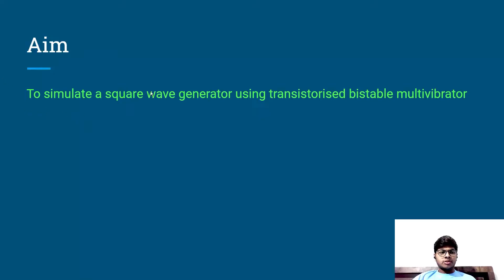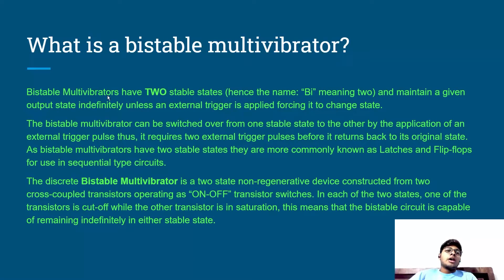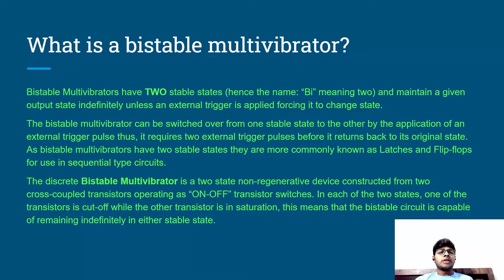Our aim is to simulate a square wave generator using a transistorized bistable multivibrator. A bistable multivibrator has two stable states — that is why it is called bistable. It will maintain a given output state indefinitely unless an external trigger, like a switch, is applied forcing it to change its state. The bistable multivibrator can be switched from one stable state to the other by an external trigger pulse. Thus, it requires two external trigger pulses before it returns to its original state.